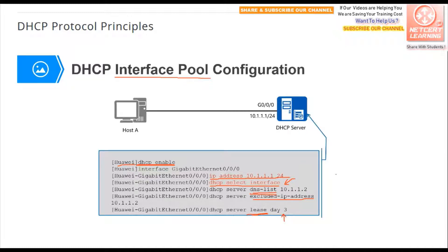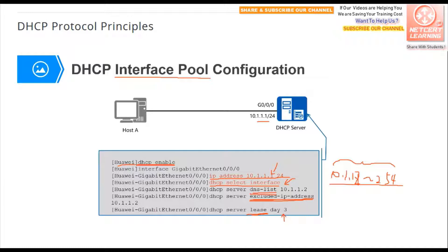For the exclude IP address configuration: the address pool is, for example, 10.1.1.0/24 — meaning addresses 10.1.1.2 to 10.1.1.254 are included in the IP address pool. Since the gateway address is already configured on the interface, 10.1.1.1 and .2 can be used. You can use the exclude command to exclude certain IP addresses from the pool, making the usable pool become 10.1.1.3 to 10.1.1.254.